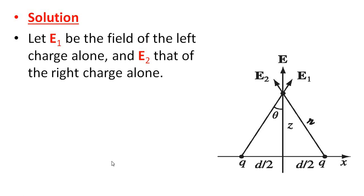Let E1 be the field of the left charge alone and E2 that of the right charge alone. The angle at each component is theta. Since this is theta, this also will be theta. This angle also will be theta, and this also will be theta.